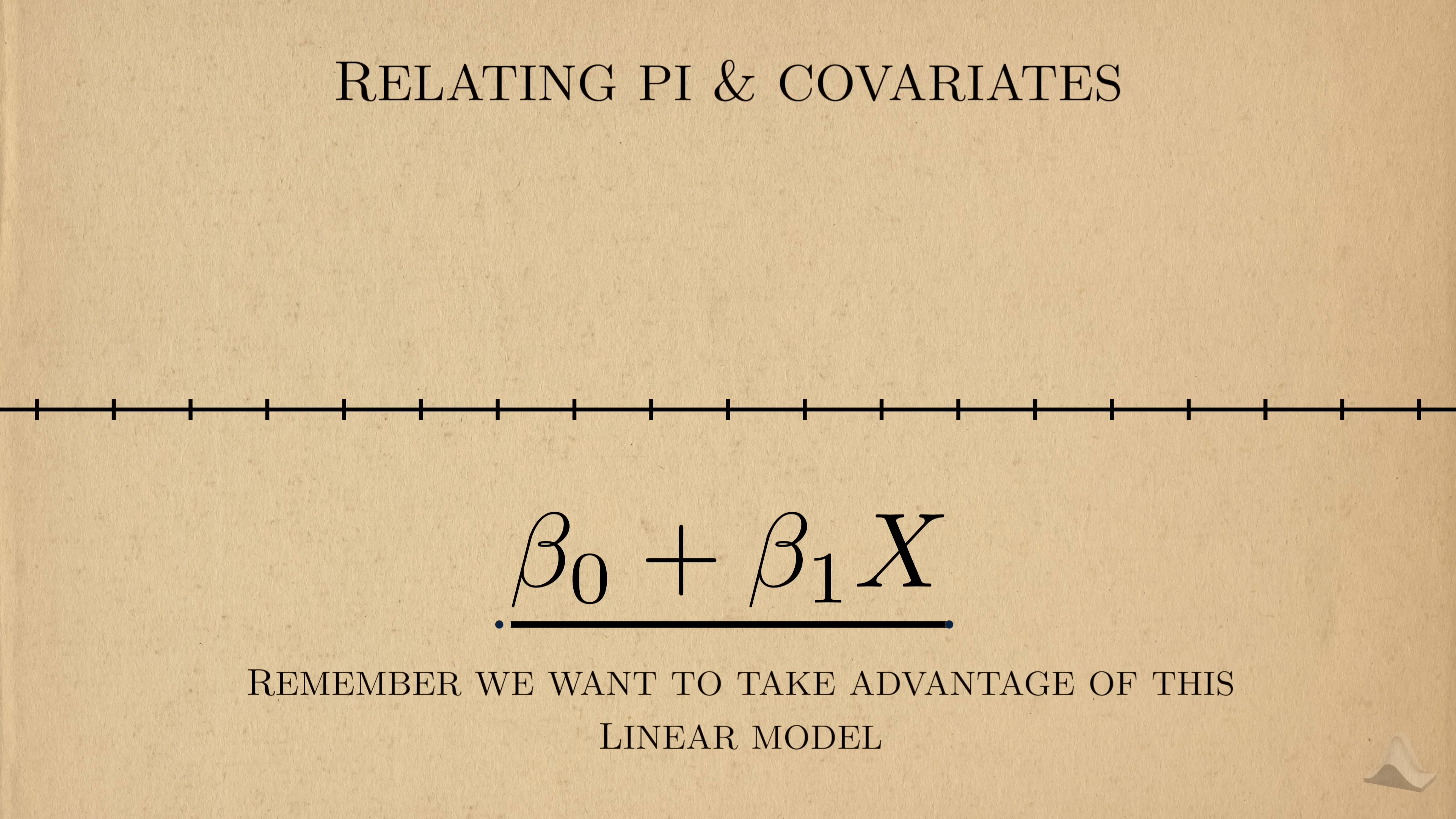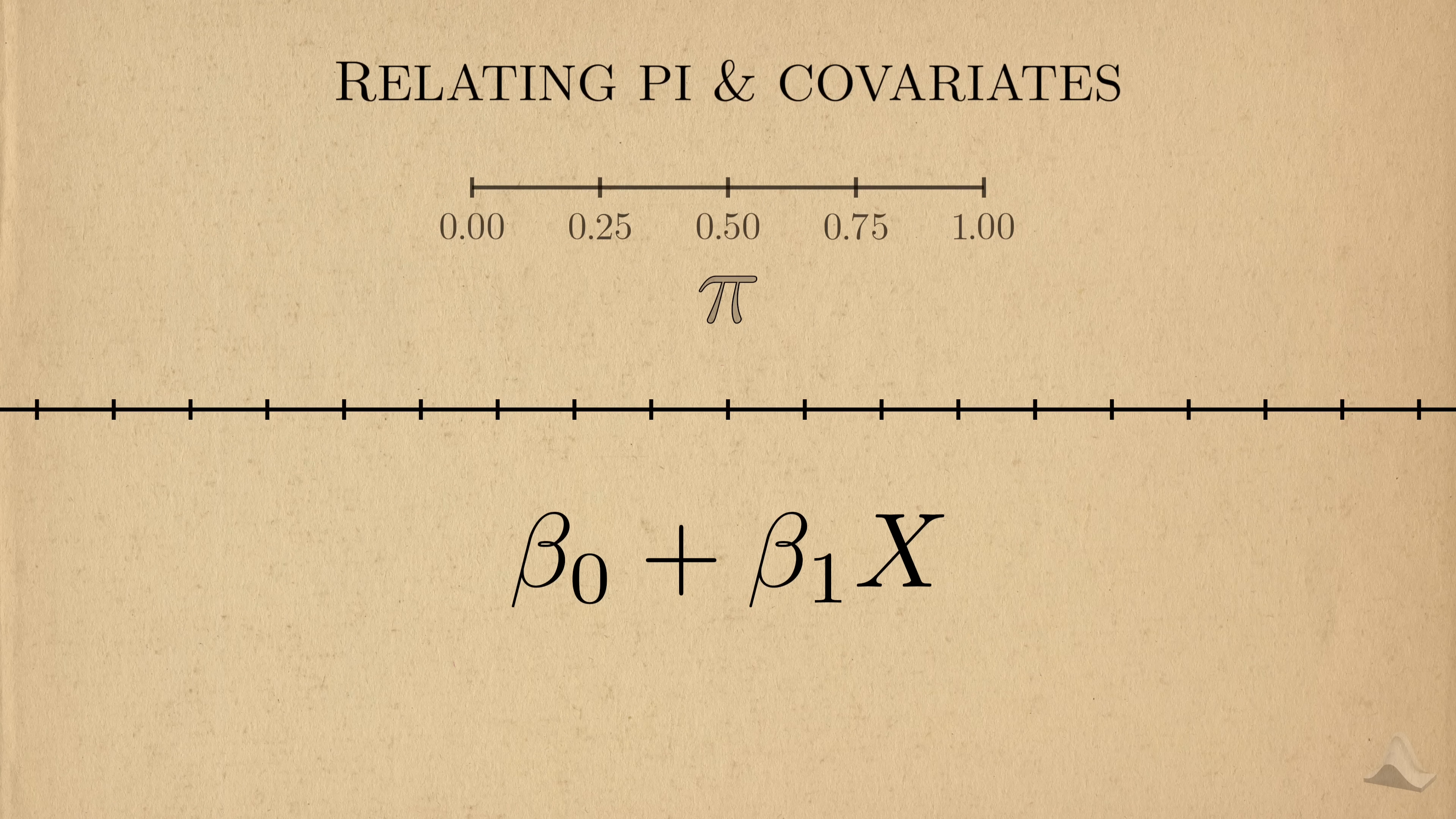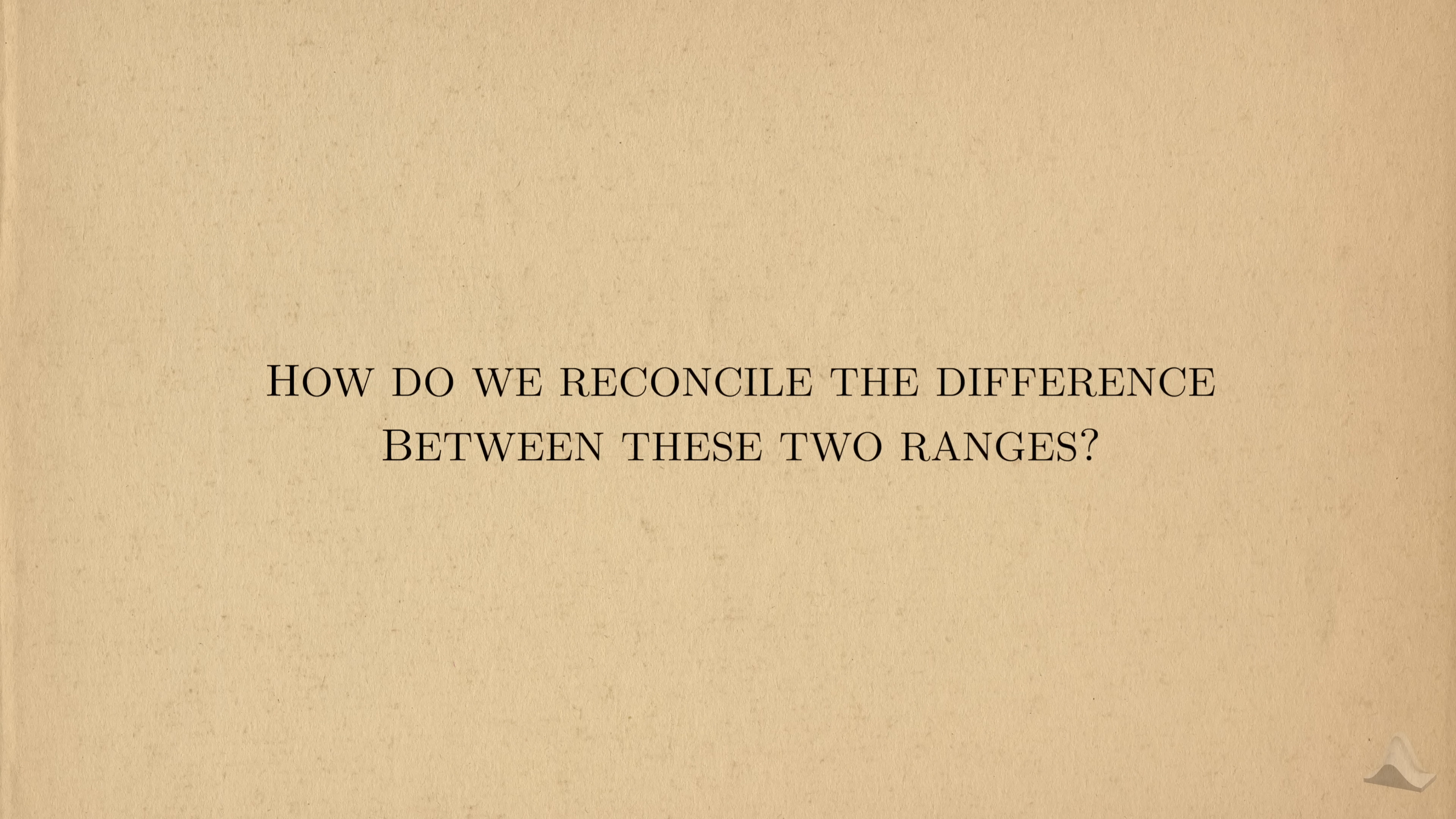Furthermore, we'd still want to take advantage of that linear model we talked about earlier. But if the values of the covariates can span the whole real line, it'd be a mismatch between the values of the linear model and the constrained values of pi. But how do we reconcile the mismatch between these two ranges?